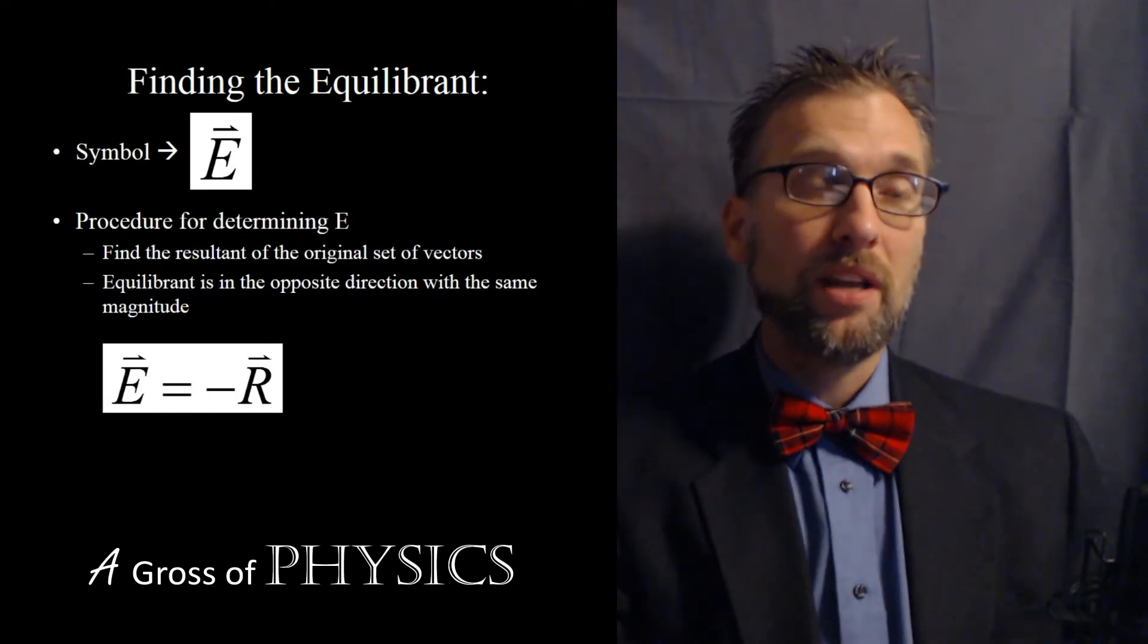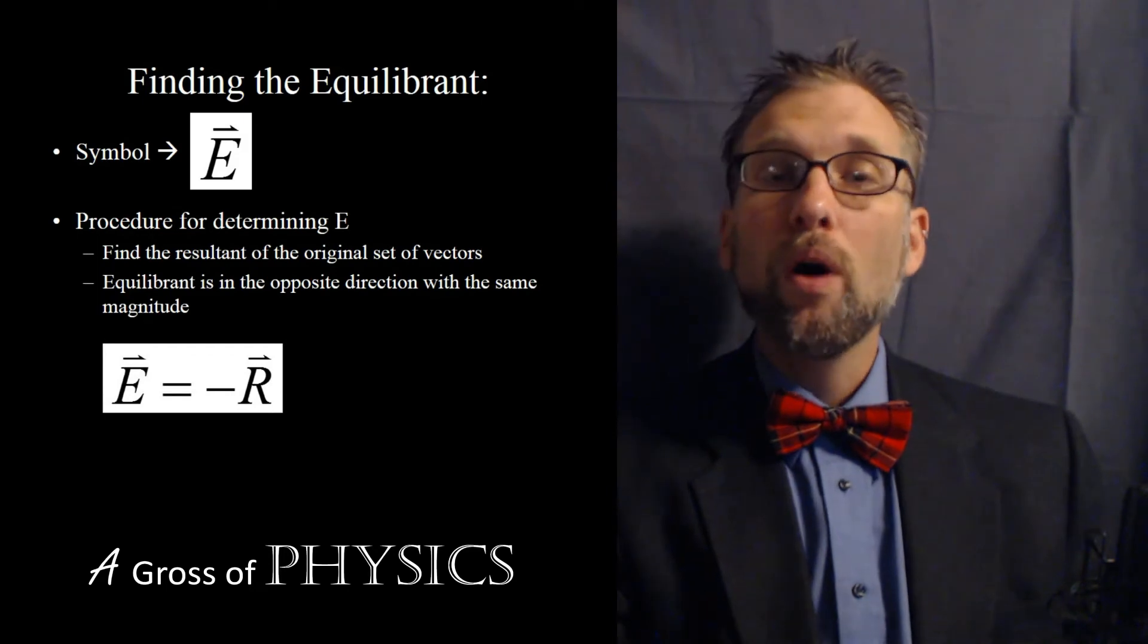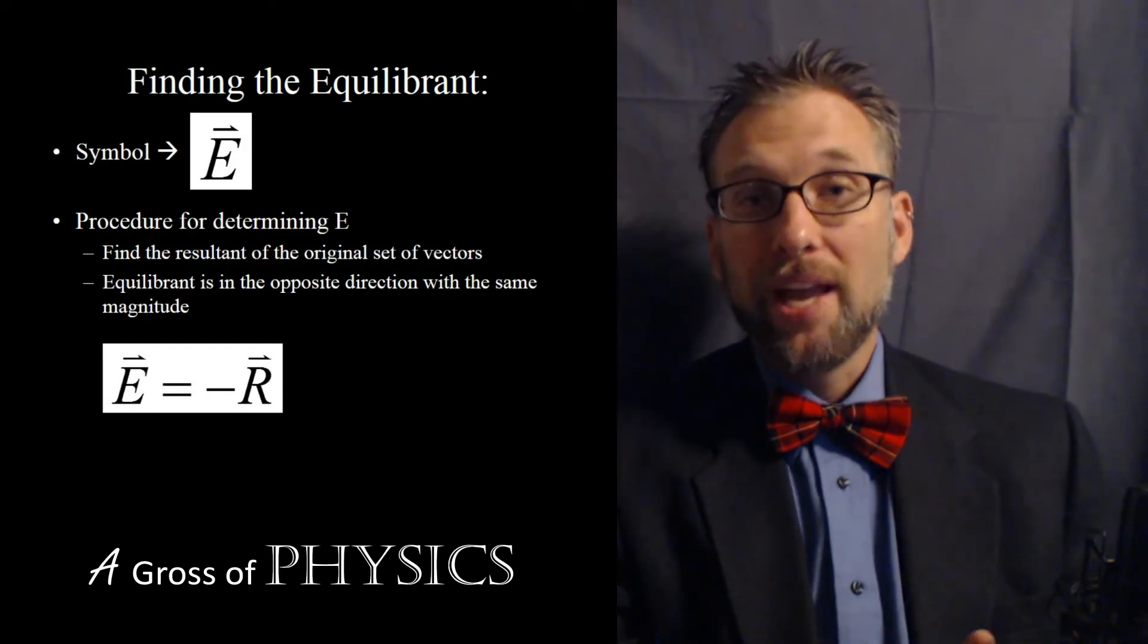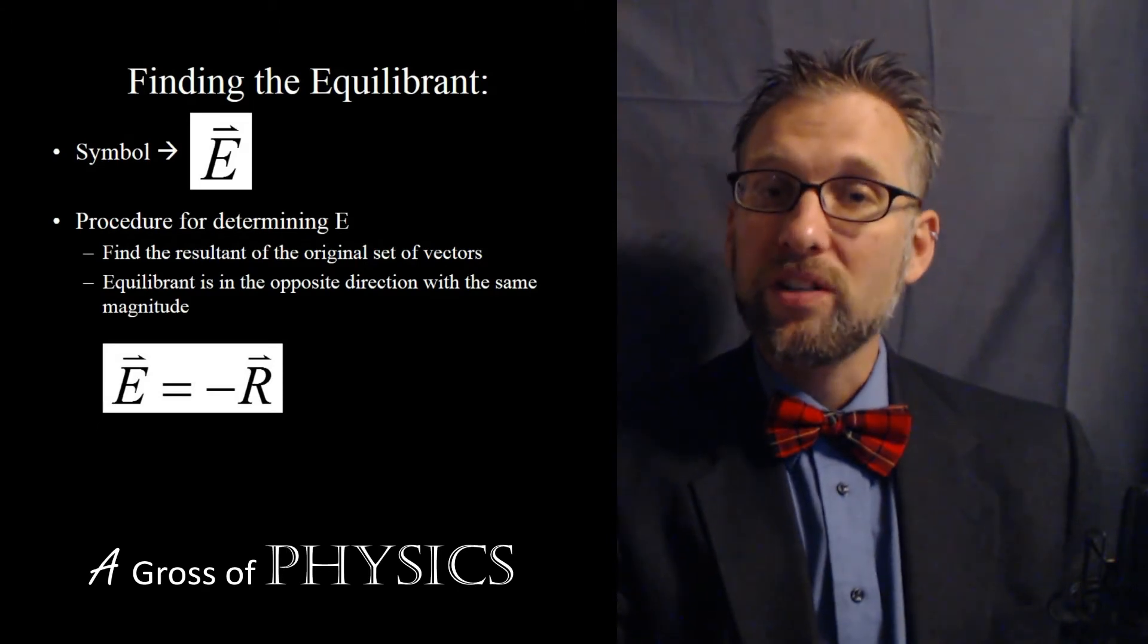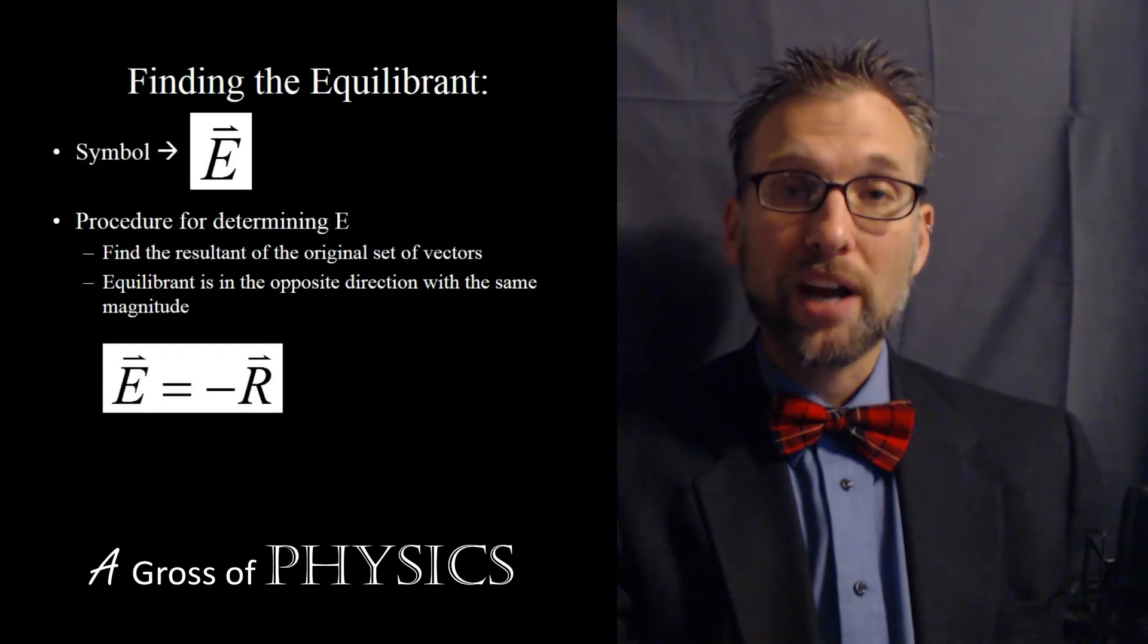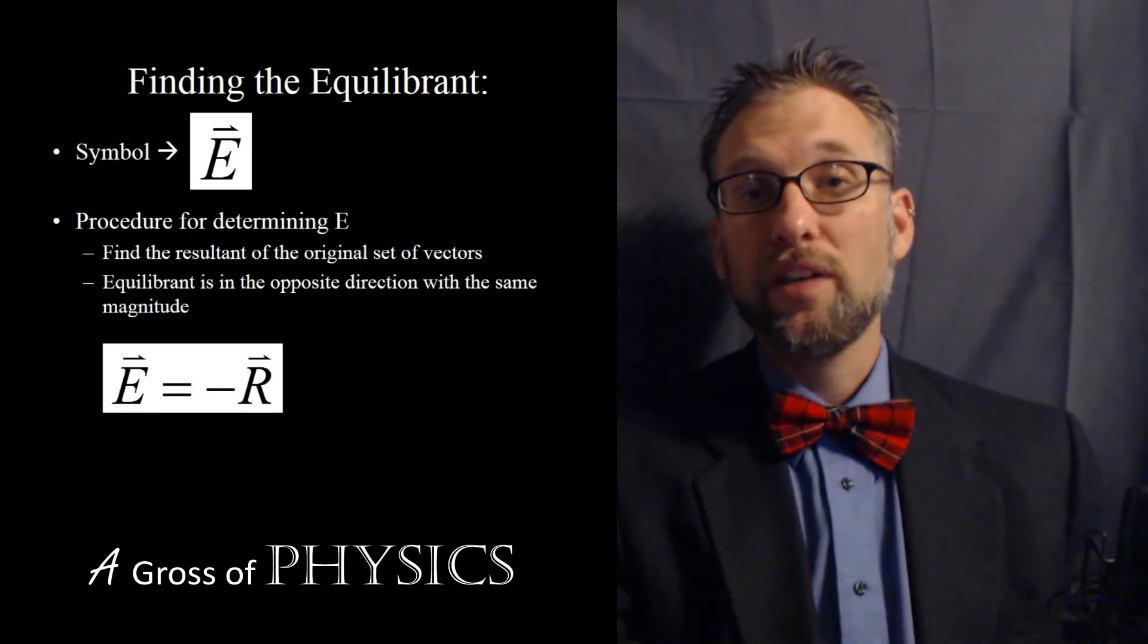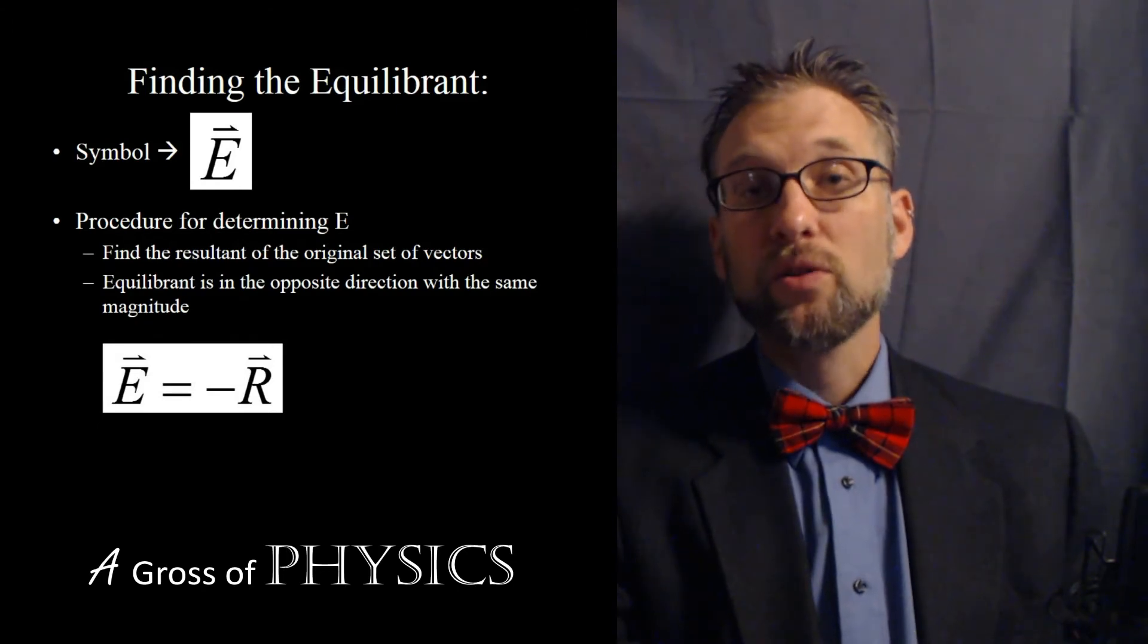What vector would make me return back to the origin? That's what's known as the equilibrant. And what we can do is just take the inverse of the direction. So instead of saying 50 meters east, the equilibrant would be 50 meters west.